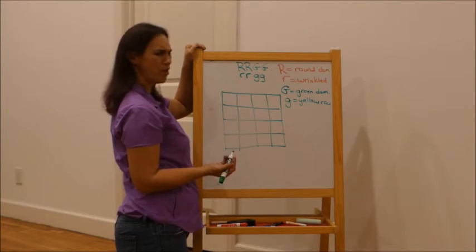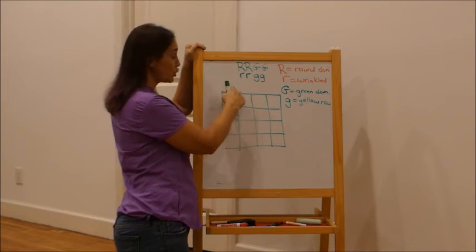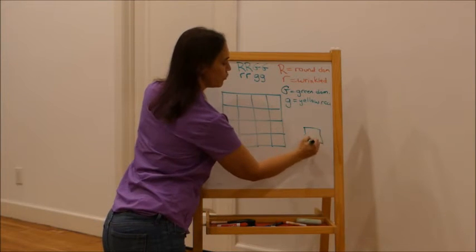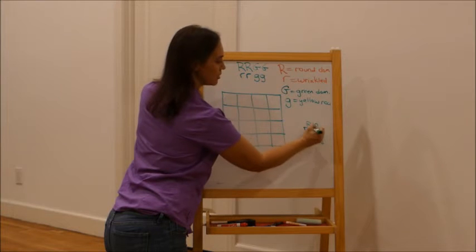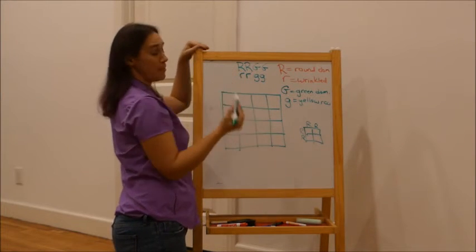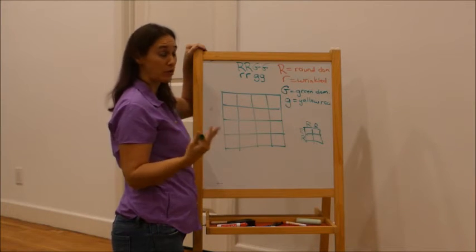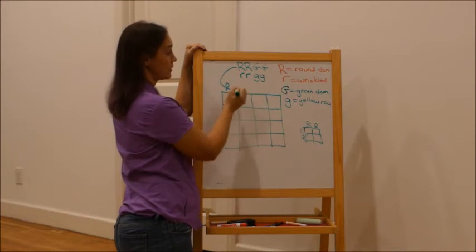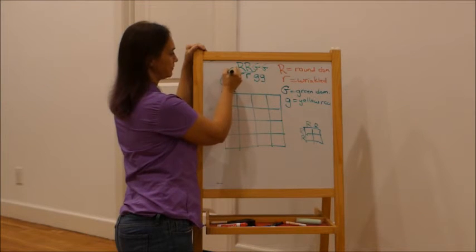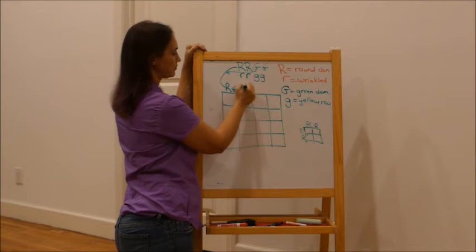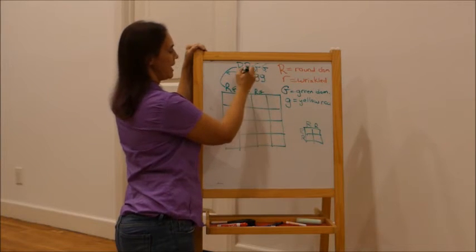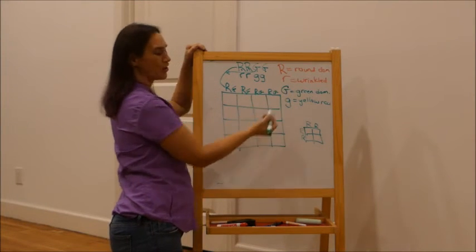Now how do we put this on the Punnett square? We're doing two traits at a time, so two alleles have to go in each top square instead of just one. Each parent can give one allele per trait, so we figure out the combinations. This homozygous dominant parent can only give capital R and capital G — so every combination across the top is capital R, capital G.